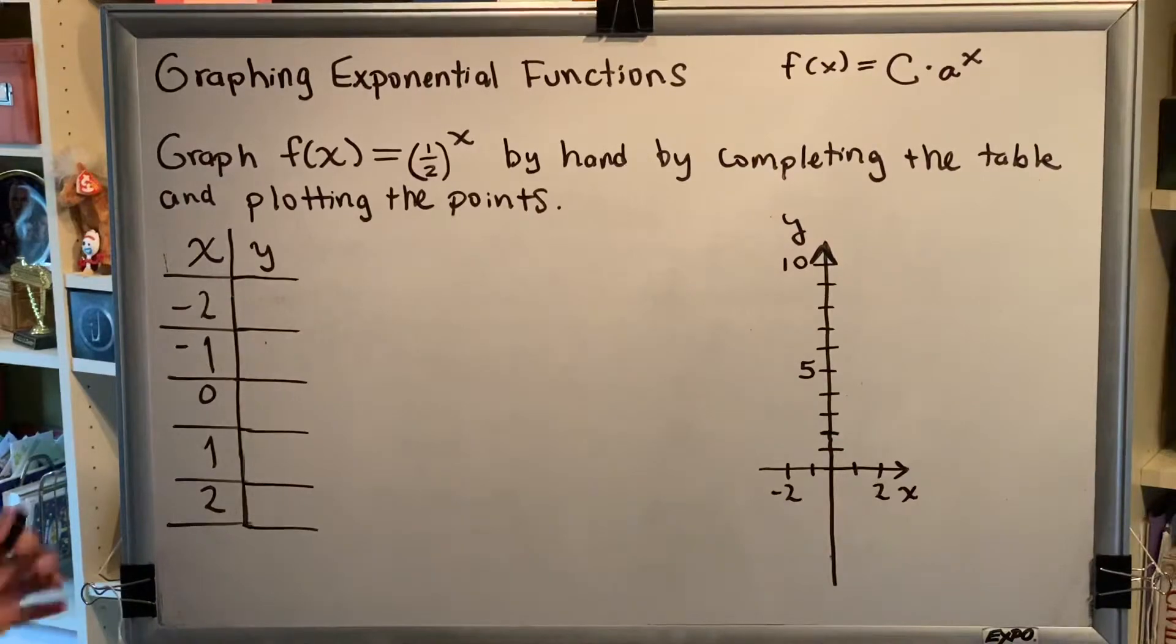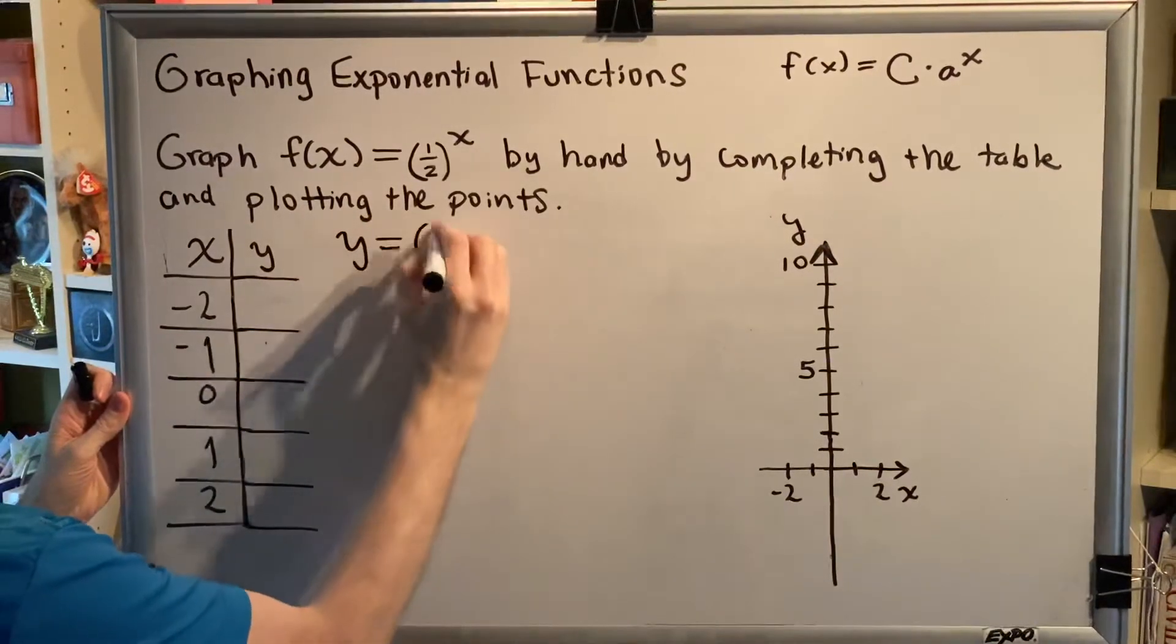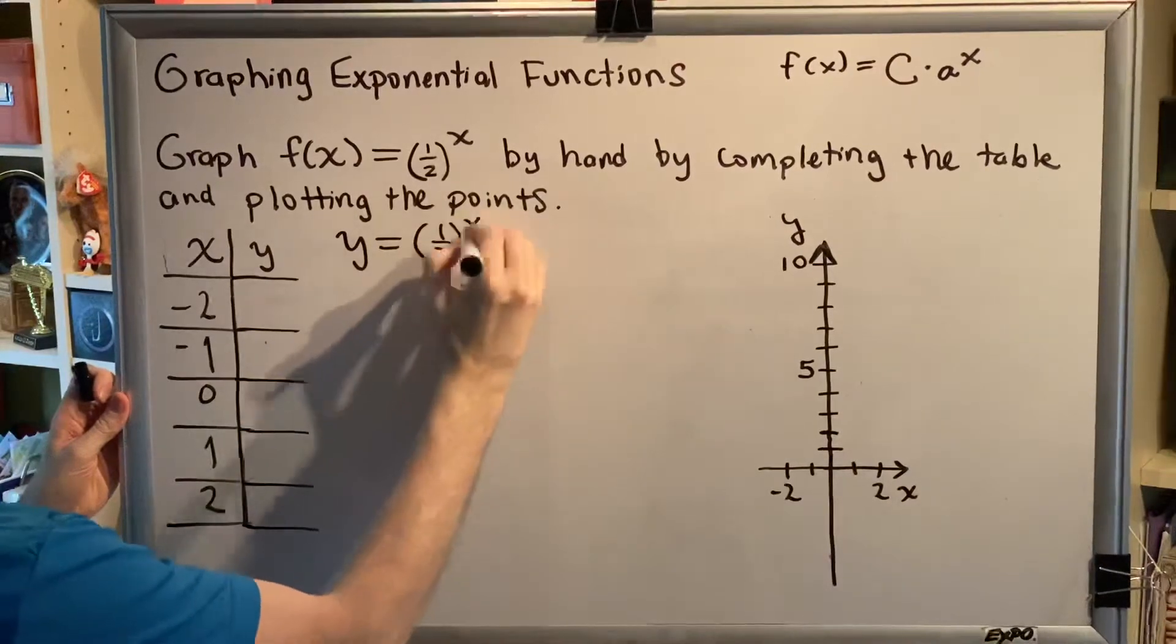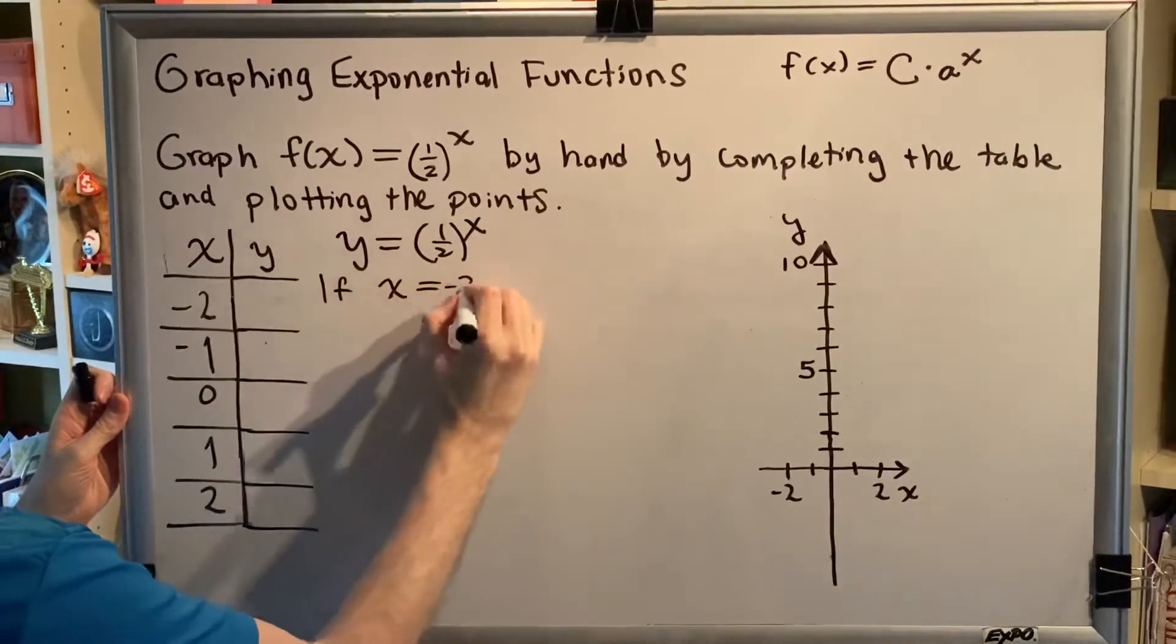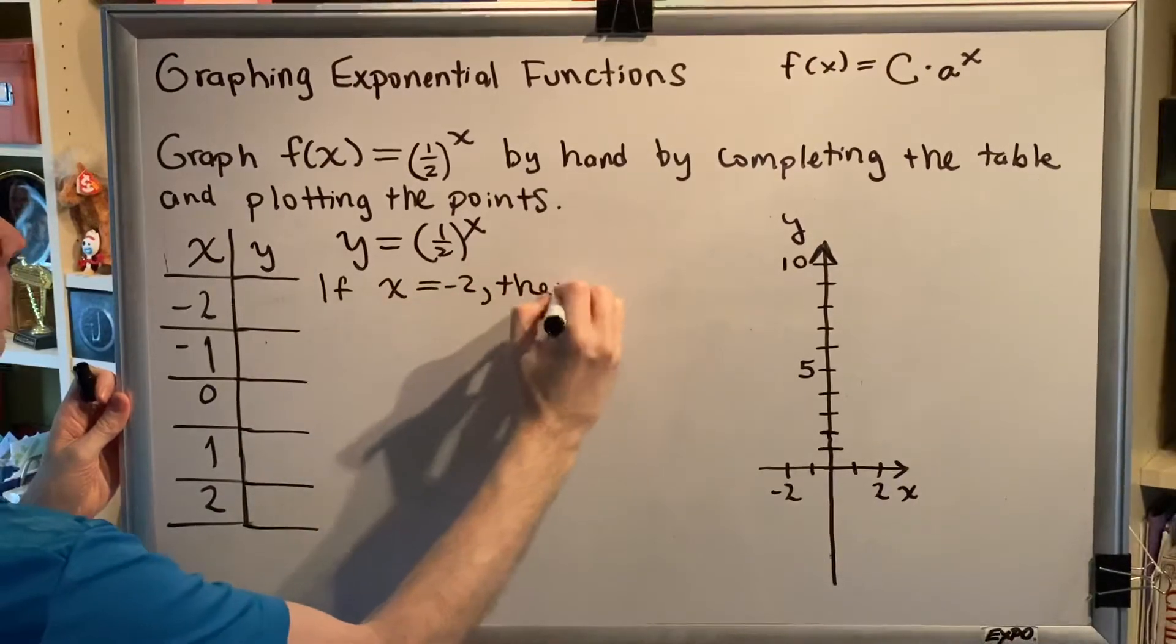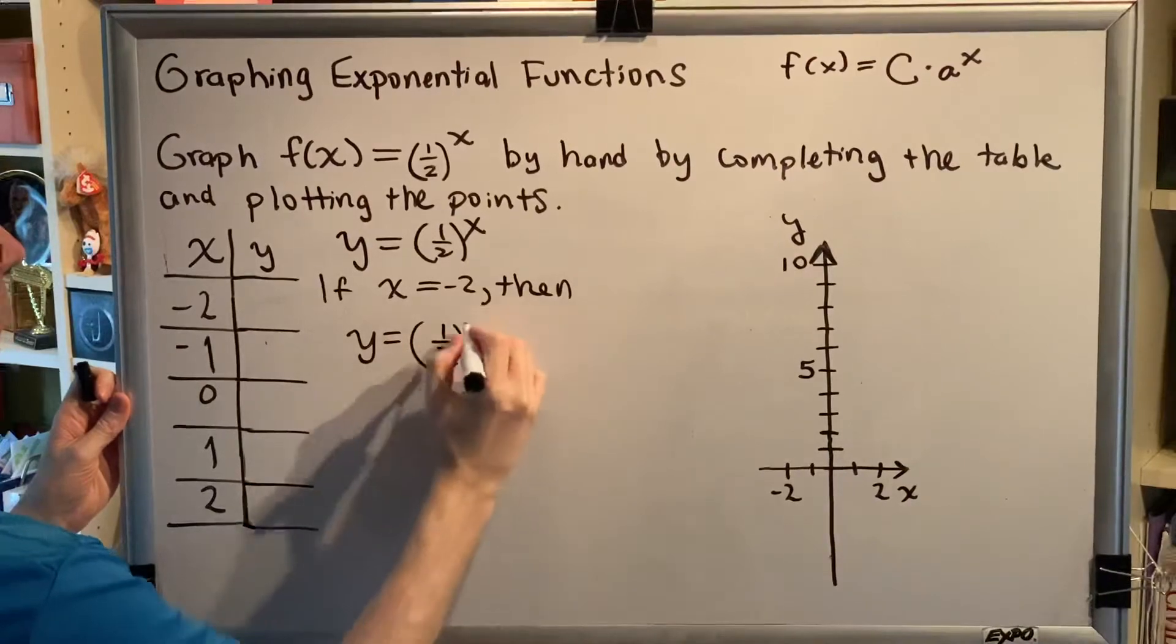Let's plug in the points one at a time. First, f(x) is the same as y, so we have y = (1/2)^x. And if x equals -2, then y = (1/2)^(-2).